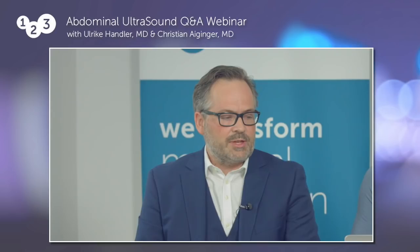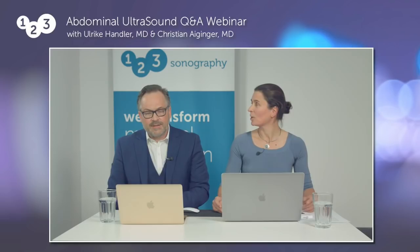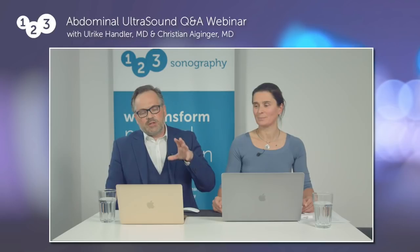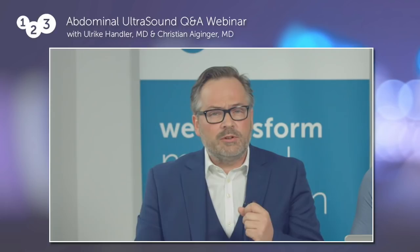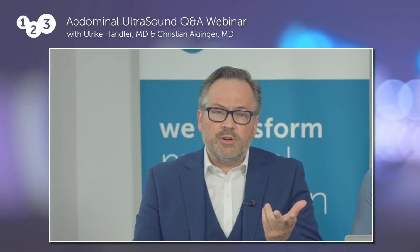Another question from Aliona: how to distinguish the IVC from the abdominal aorta? When you look at the aorta in longitudinal view, it's an artery with a single pulse, a very defined thick wall, and you can sometimes see branches originating from it — the celiac trunk and the superior mesenteric artery.